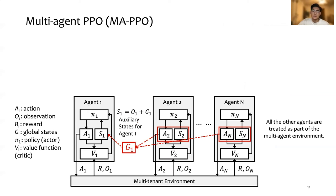The idea of MA-PPO is to make each agent aware of all the other agents in the shared platform and model them as part of the environment. There are two main changes.